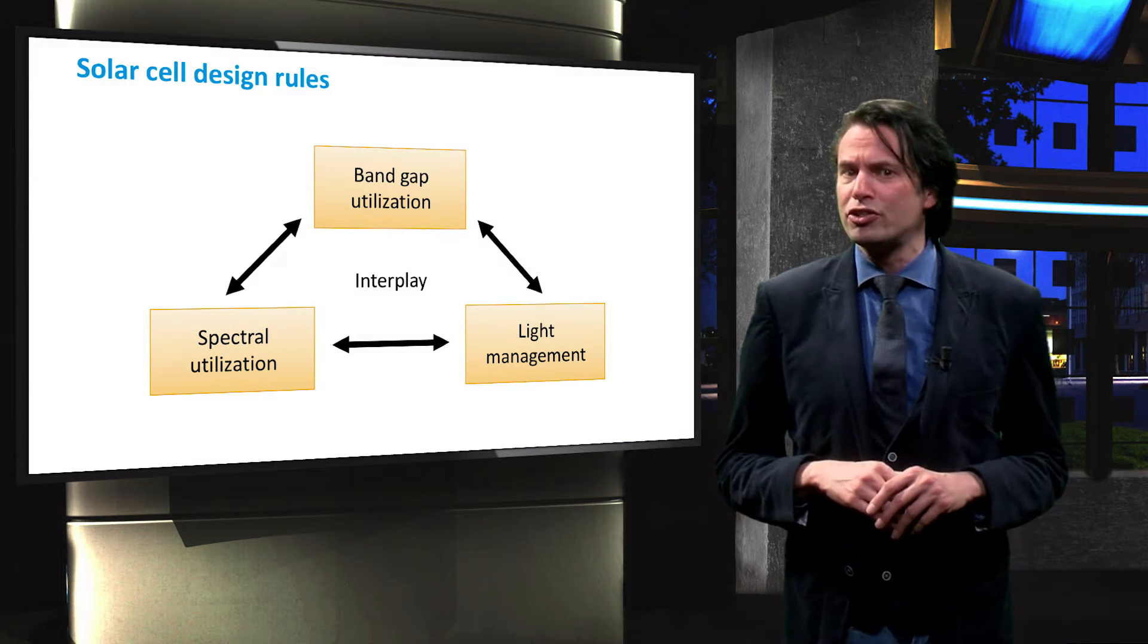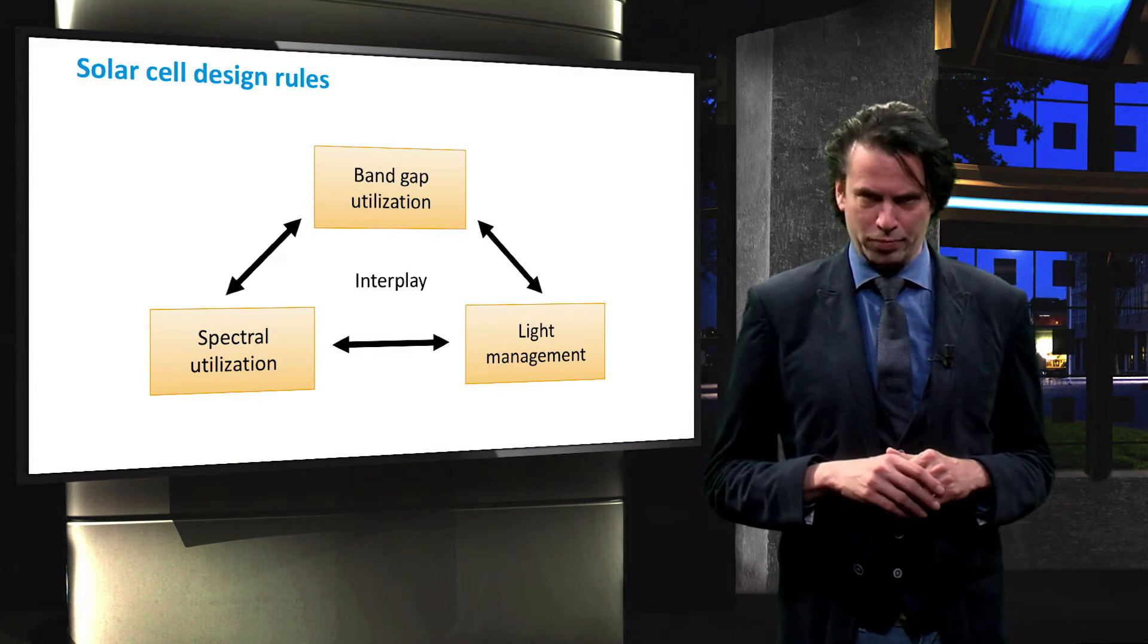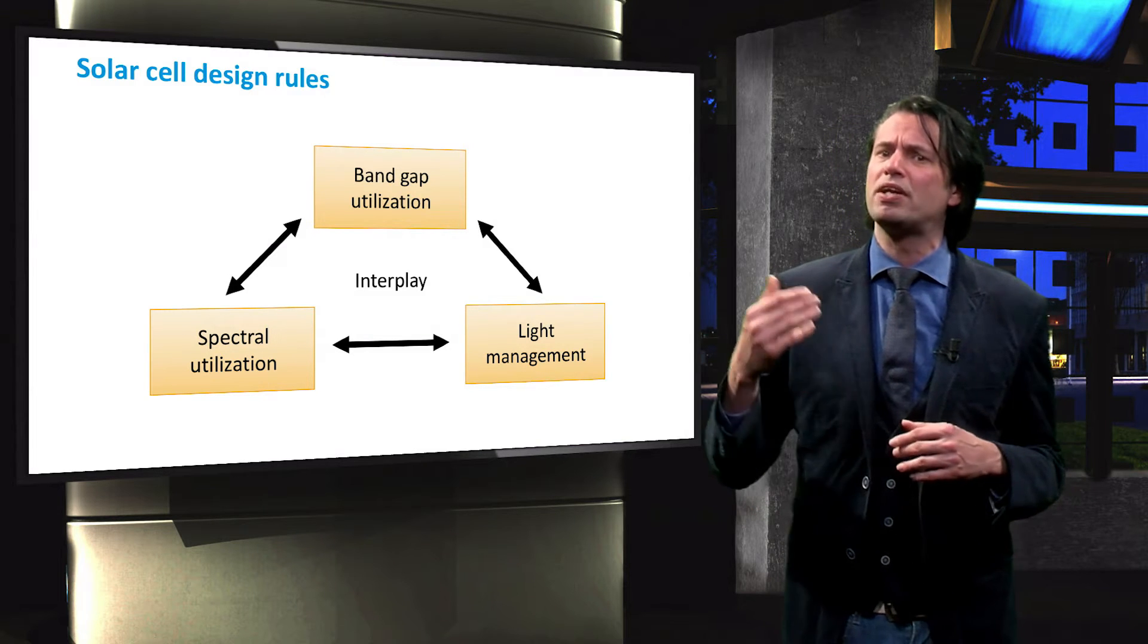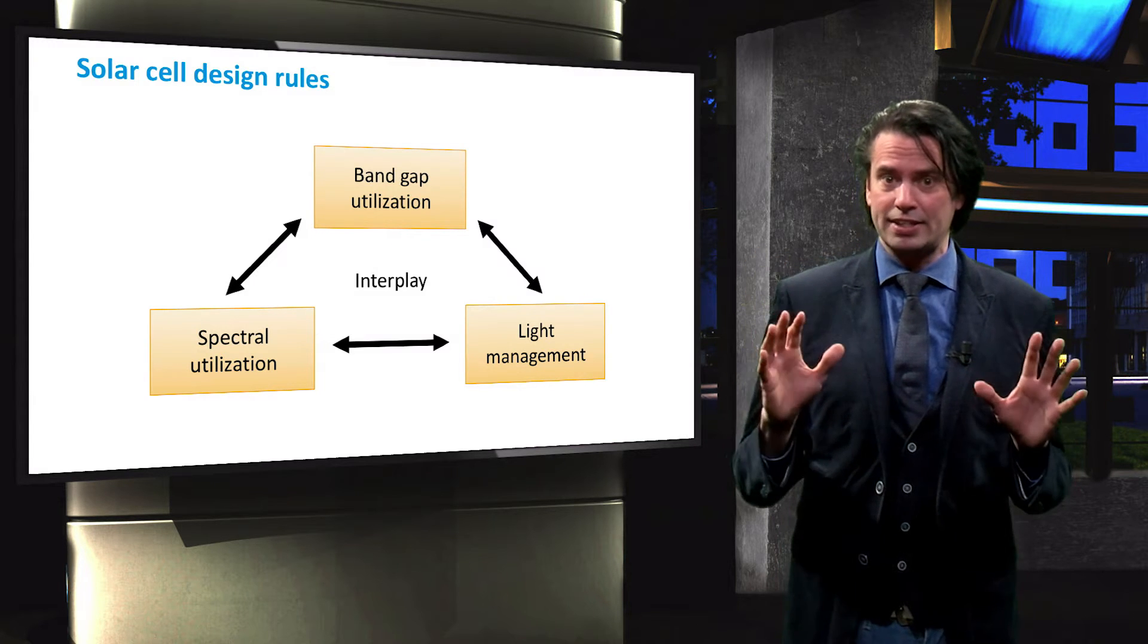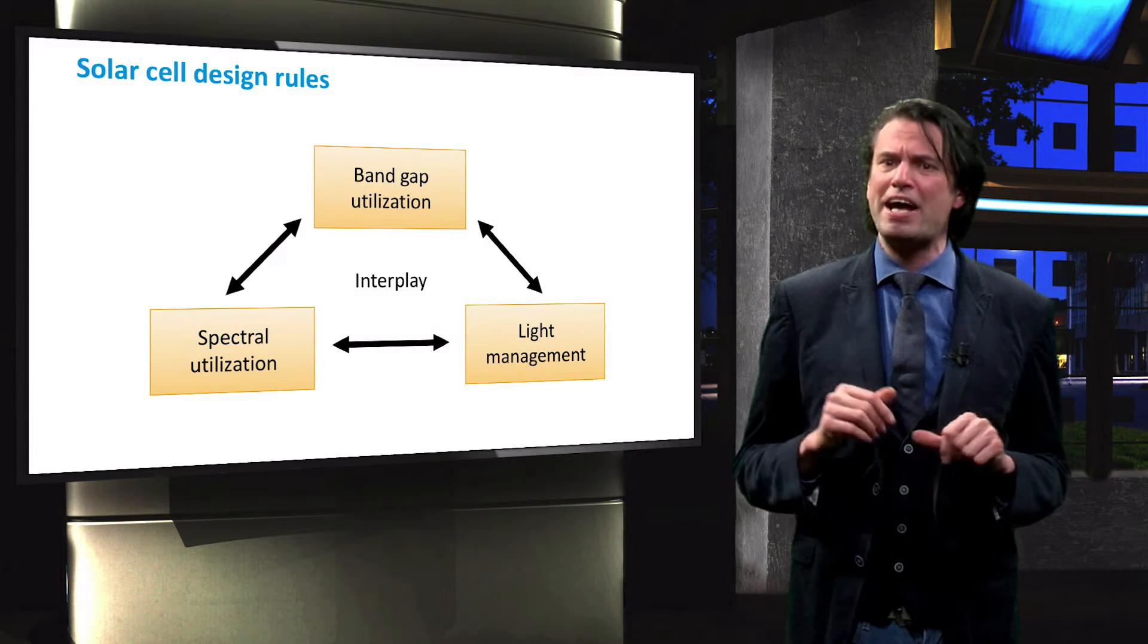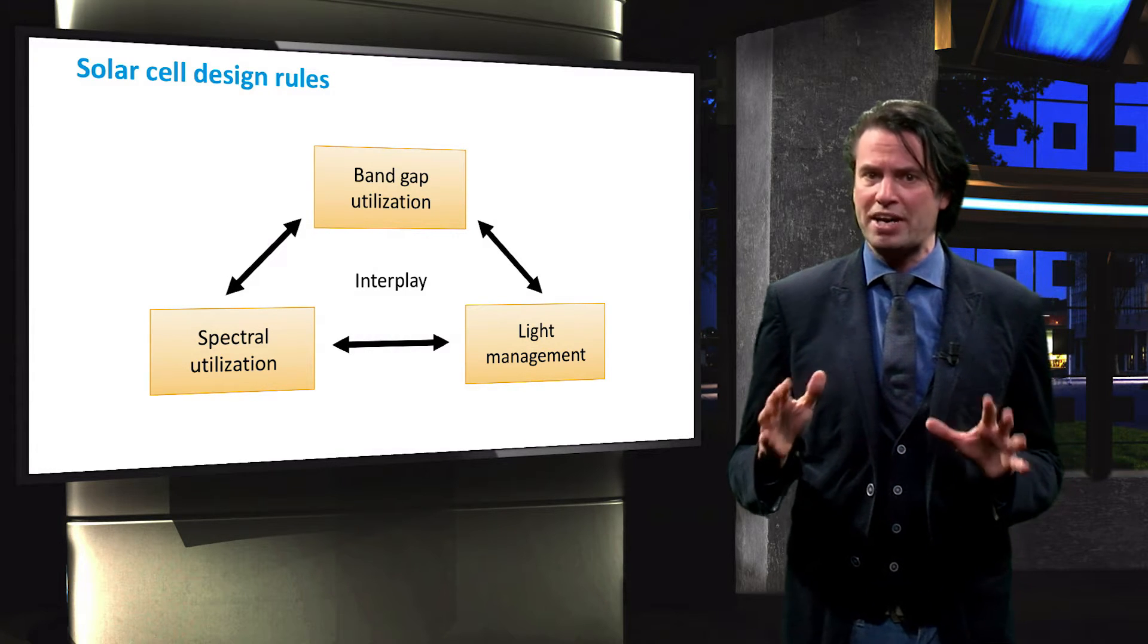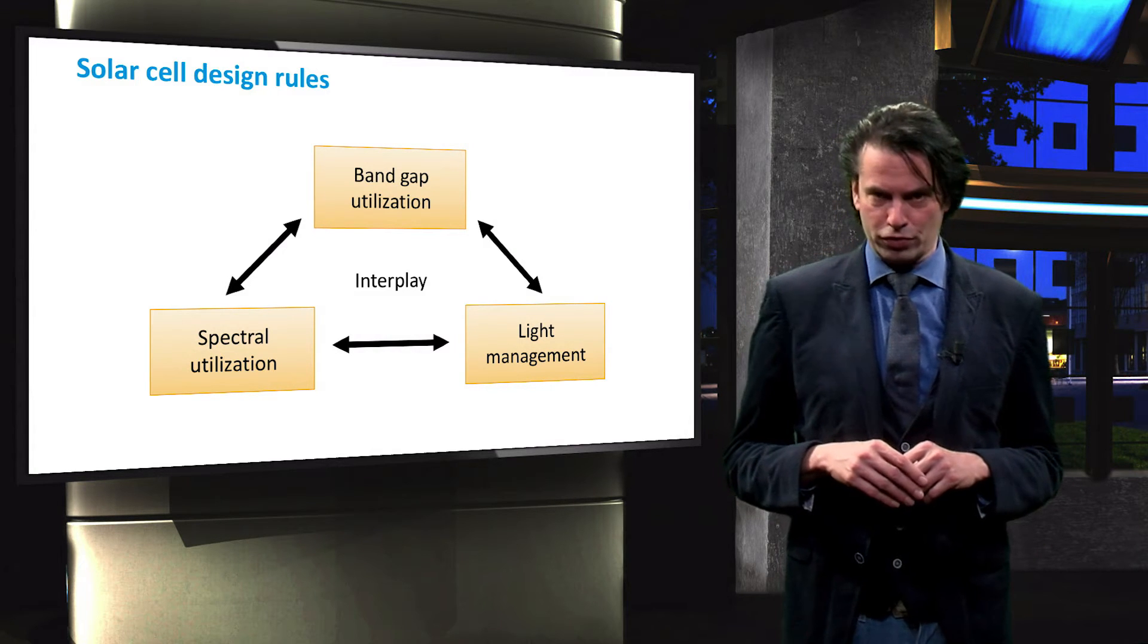We recall the solar cell design rule figure, which we have seen in the previous video. We now understand that the spectral utilization puts an upper limit on the efficiency of a solar cell. To what extent this limit can be reached depends on the electrical performance, which is the domain of the band gap utilization and the optical performance of the solar cell.